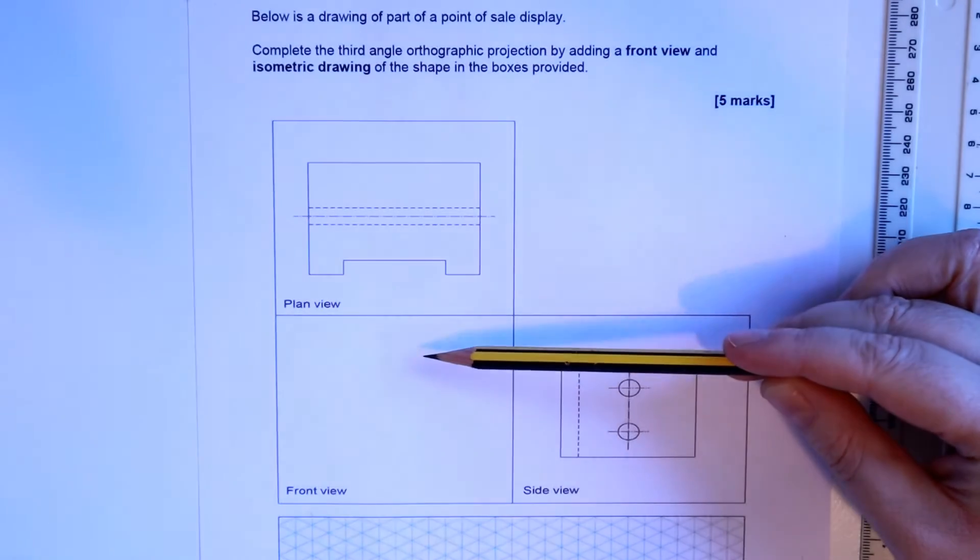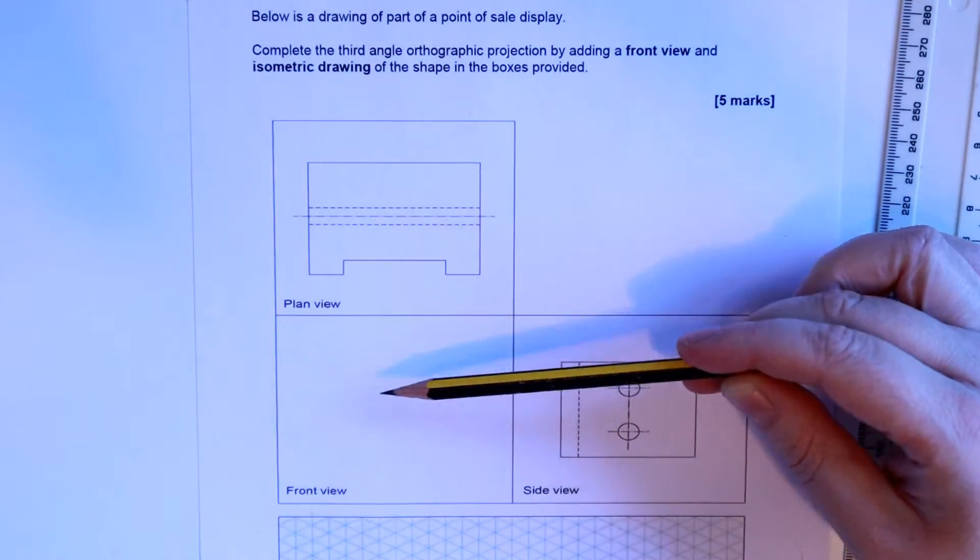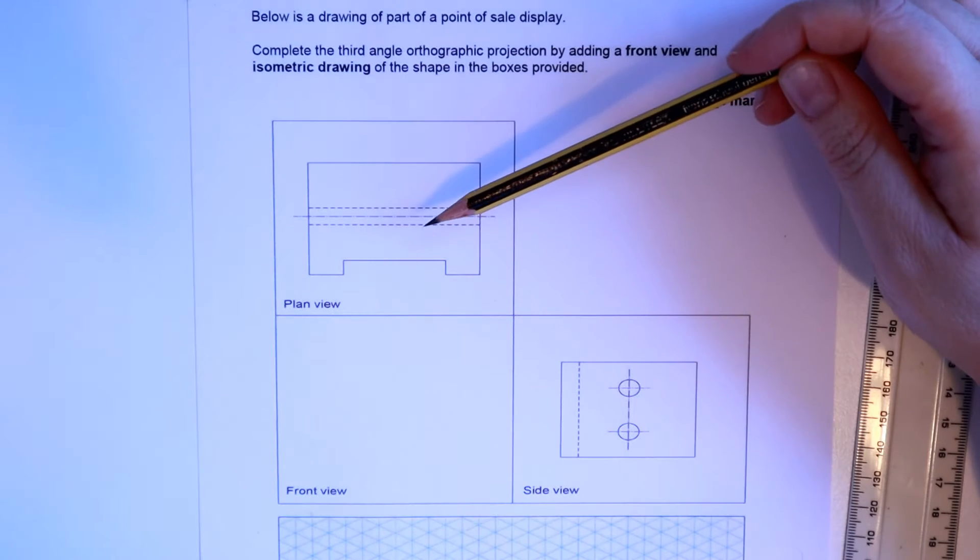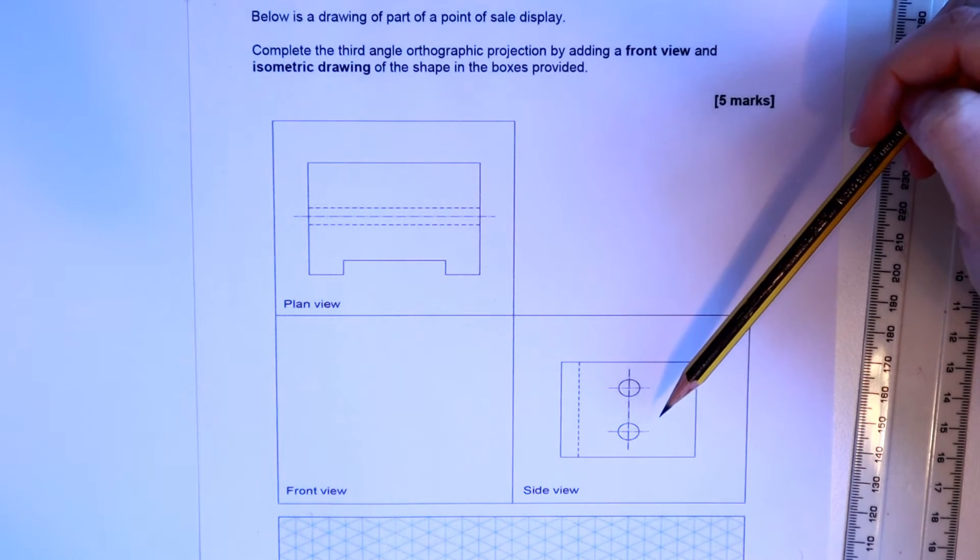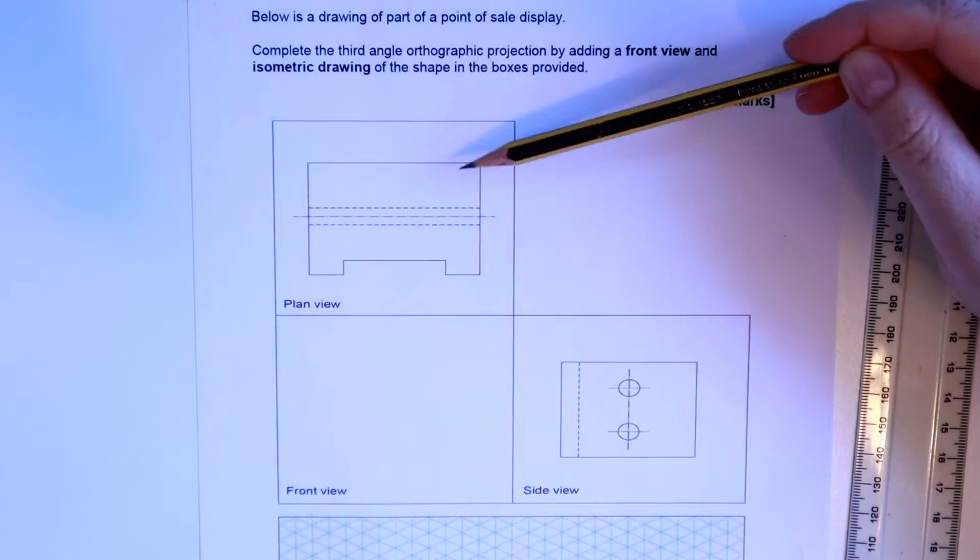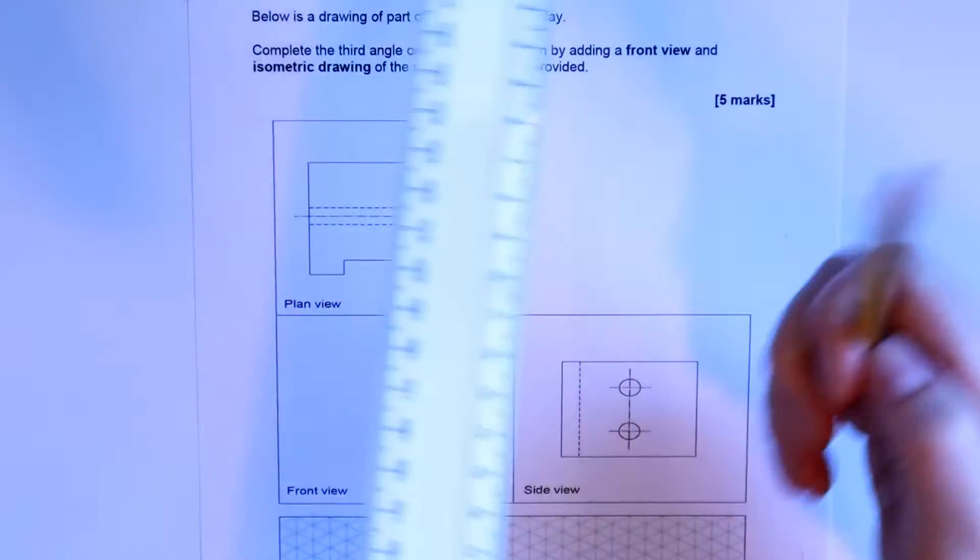First of all, it's asking to do an orthographic front view here, where the space is. You've already got the plan view, which is the top view, bird's eye view, and you've also got the side view there already. So you need to use these so you know where all the features are and the size.